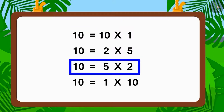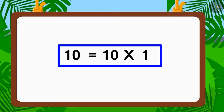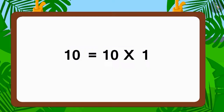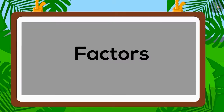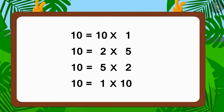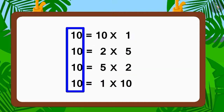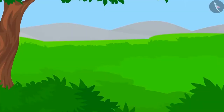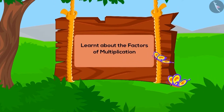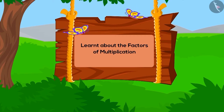This is how we can write any number as a multiplication of two numbers. The two numbers that form part of the multiplication are known as factors. Here, one, two, five, and ten are factors of ten. In this lesson we learned about factors of multiplication, and in the next two lessons we will see some interesting examples of the same.